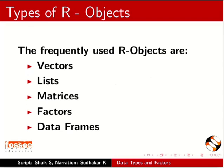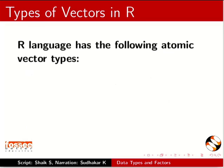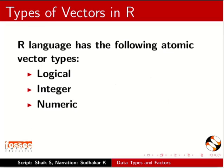The simplest of these objects is the Vector object. R language has the following atomic vector types: Logical, Integer, Numeric, Complex, and Character. By atomic we mean that a vector holds data of a single data type. Now we will learn how to declare these vector types.